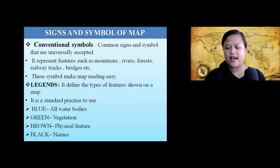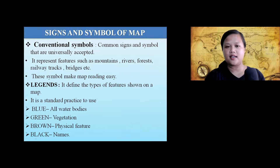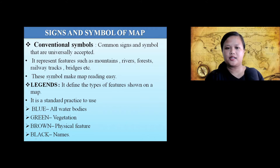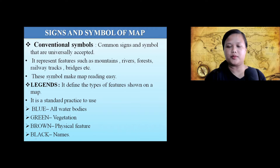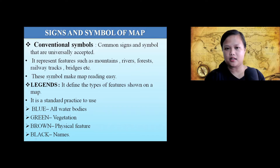The symbols and signs used on a map are known as conventional symbols. They are the common signs and symbols that are universally accepted. They also represent features such as mountains, rivers, forests, railway tracks, bridges, etc. To identify or differentiate them, we use conventional symbols.